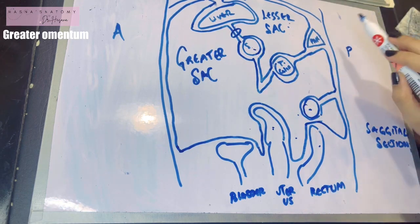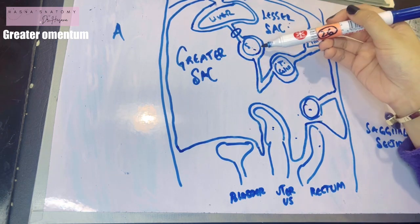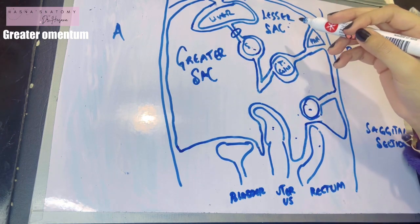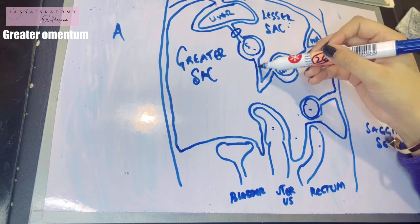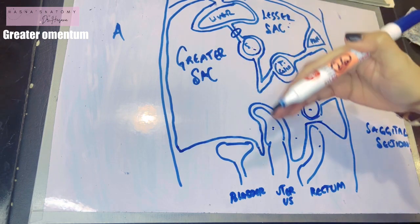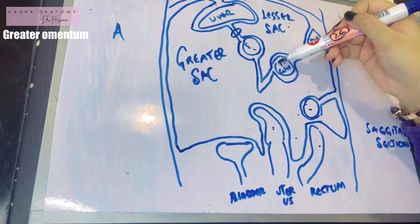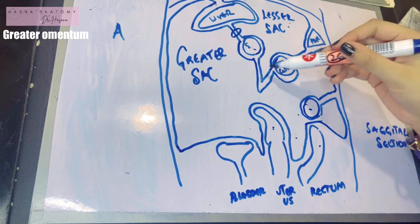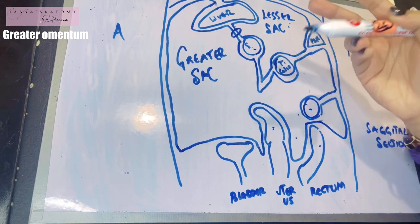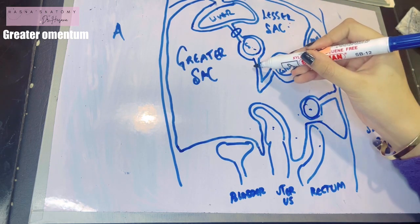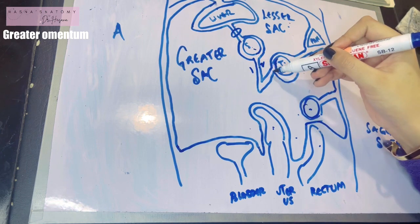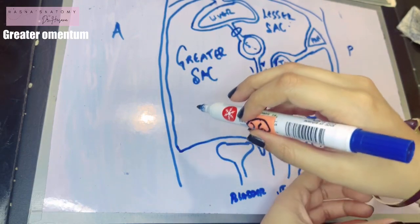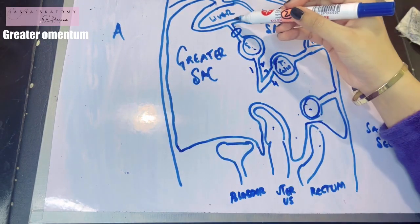The greater omentum is a large peritoneal fold extending from the greater curvature of the stomach, folding upon itself and covering the entire intestine, then going up again and attaching to the transverse colon. It also attaches to the anterior surface of the pancreas. The greater omentum consists of four layers of peritoneum: first, second, third, and fourth layers — that is what is special about the greater omentum, unlike the lesser omentum which is only two layers.